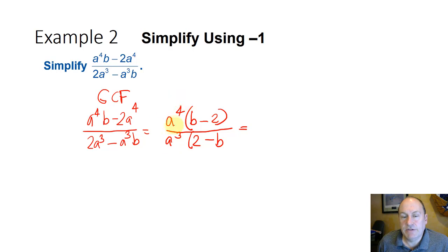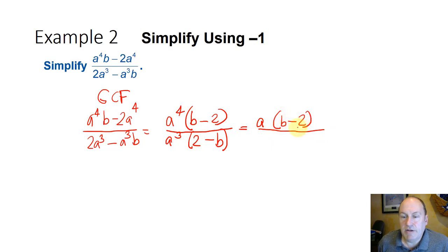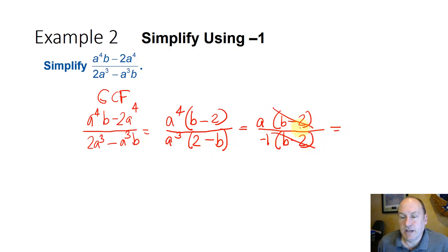a to the fourth divided by a to the third, using the quotient rule for exponents, gives a to the 1. Then (b minus 2) divided by (2 minus b): we rewrite 2 minus b as negative 1 times (b minus 2), so the denominator can be reversed by factoring out a negative 1. The (b minus 2) terms cancel, leaving a divided by negative 1, or negative a.